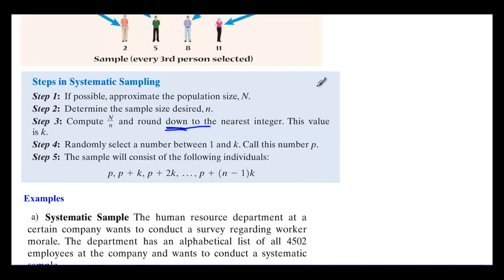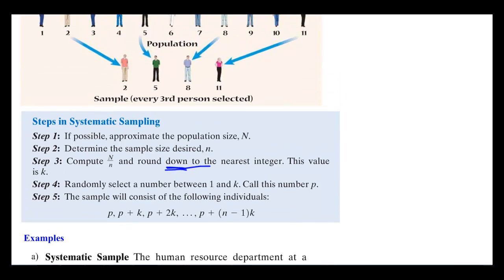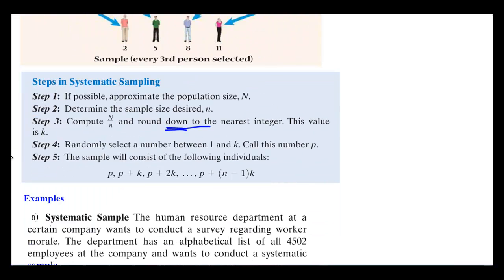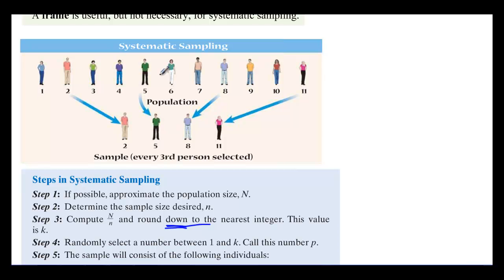It sounds confusing but it's really not that bad. In this picture, there's a population of 11. They started with number 2 and are sampling every third person — so they get number 2, then 5, then 8, then 11, ending up with a sample size of 4.